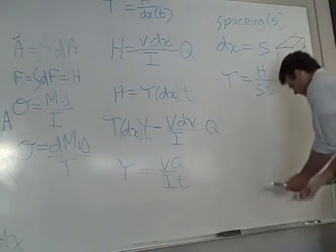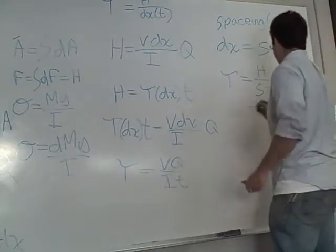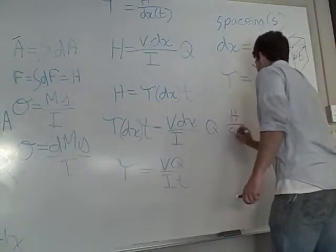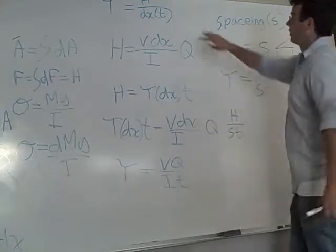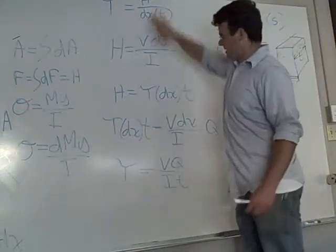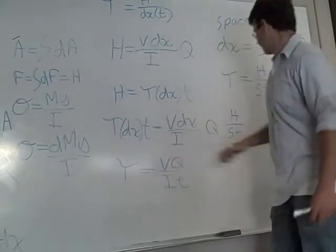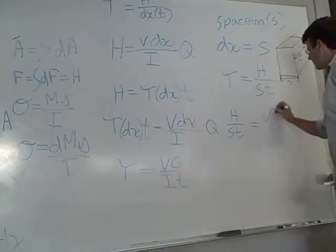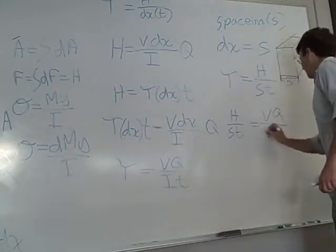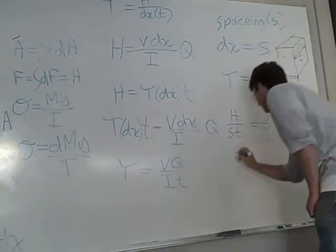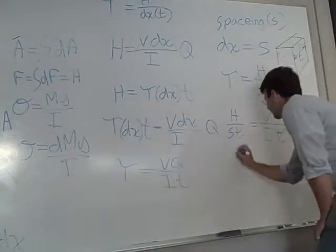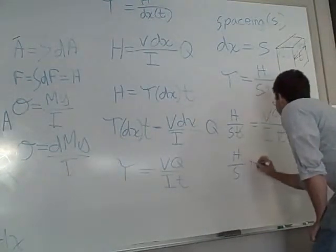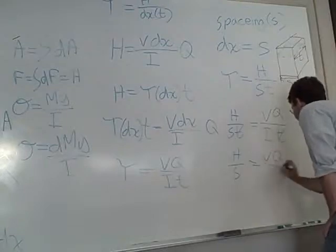And so, we have H over ST, setting the two shear equations equal to each other, equals VQ over IT. So, the T's are going to cancel out, and we're going to have H over S equals VQ over I.